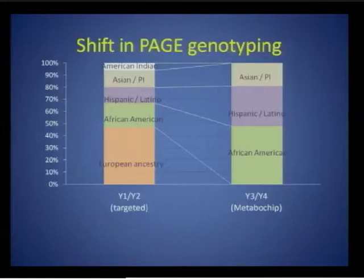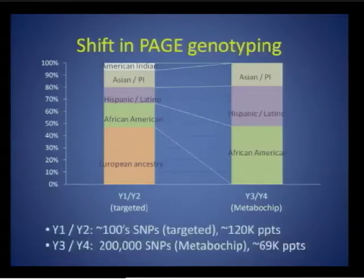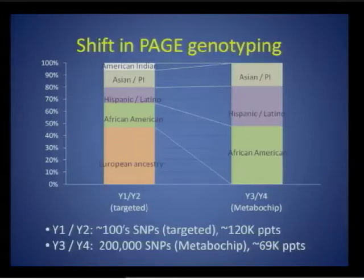All of the participants with Metabochip genotyping are of non-European descent, playing to PAGE's key strength. Nearly half are African American, with about 30 percent of Hispanic/Latino descent and the remainder of Asian and Pacific Islander descent. The cost efficiency of the Metabochip enabled PAGE to increase its genotyping capacity by orders of magnitude, from hundreds to hundreds of thousands of SNPs.